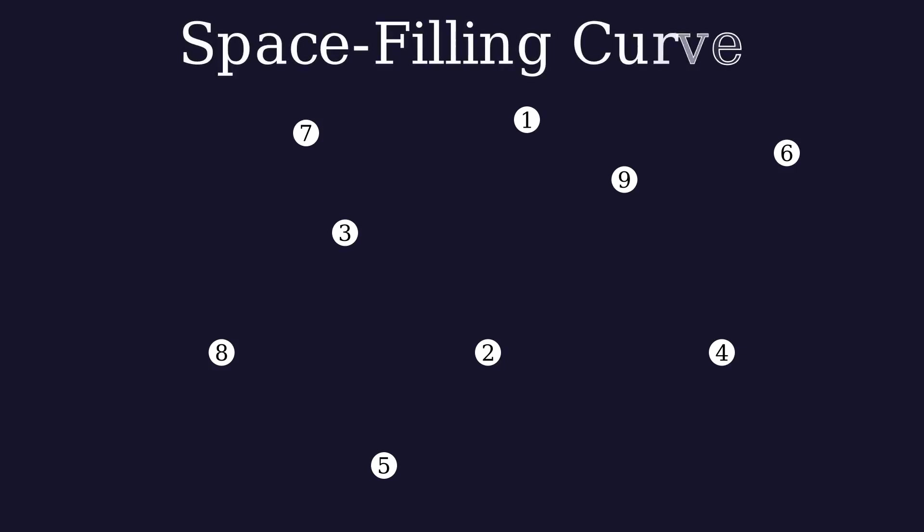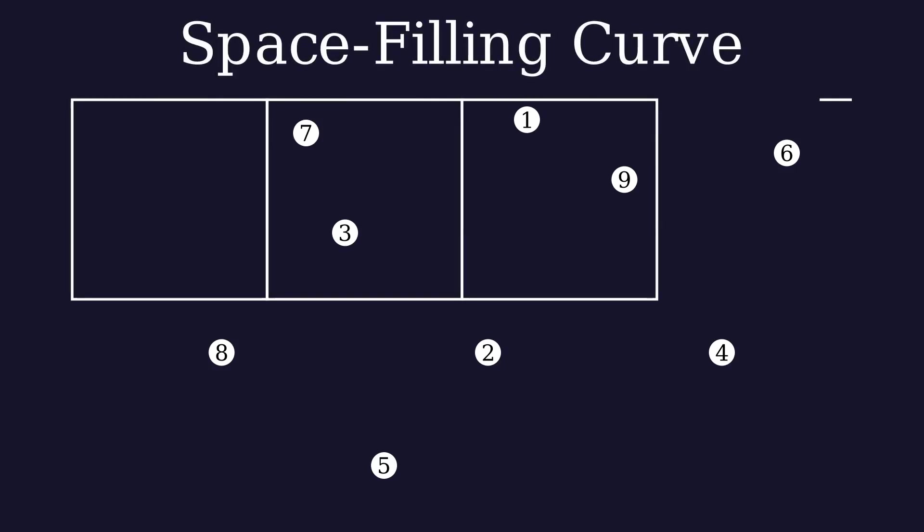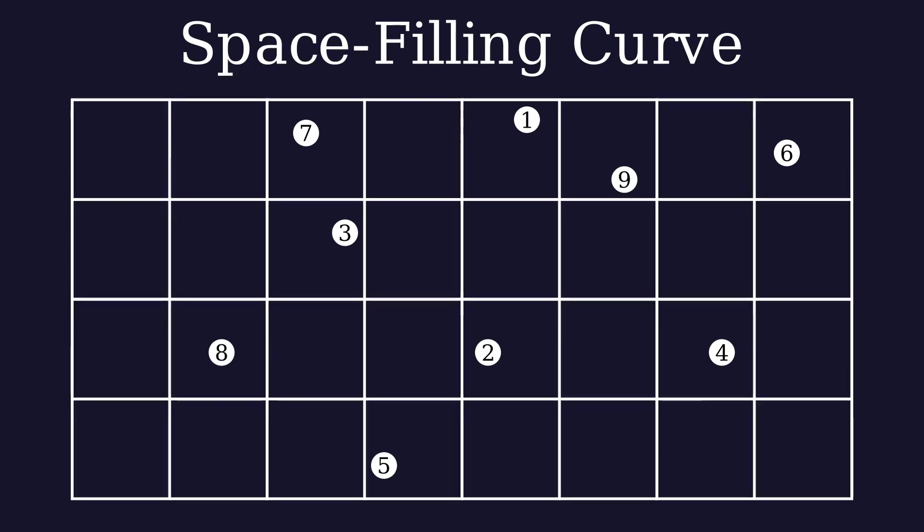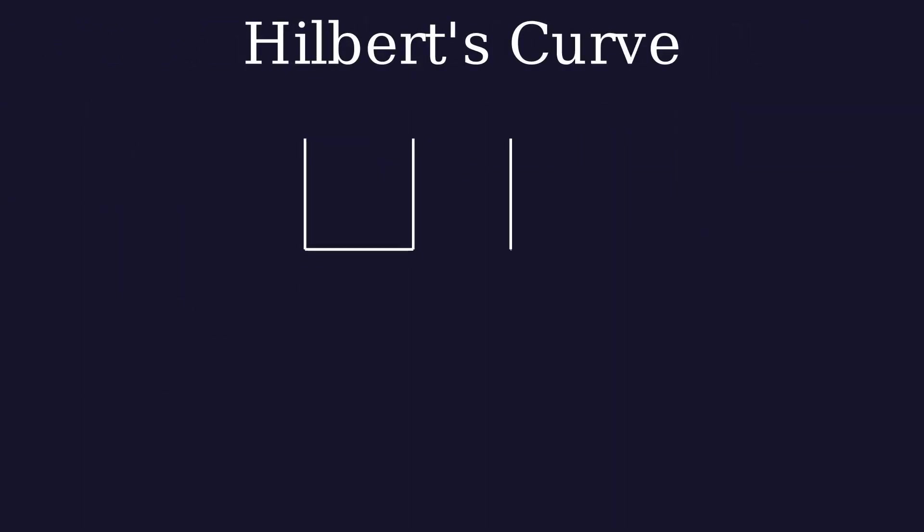There are also many different clever methods of creating short paths. For example, if the salesman doesn't need to come back to where he started, we can use something called a space-filling curve. First, we make a grid. We keep adding more and more lines to the grid until each node is in its own little box. Then, we use a special line called a space-filling curve that goes through every single box in the grid. One example of a space-filling curve is called the Hilbert's curve and it looks like this.